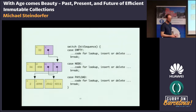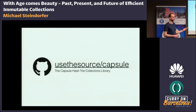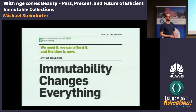If you're interested in learning more about these data structures, you can look at Clojure on the JVM, Scala, or also Capsule — a library I'm involved with that implements some of the more recent concepts of hash tries. To conclude with the words of Pat Helland: immutability changes everything. There is a cost attached to immutability, but most of the time we can afford to pay it, and it also pays off in different ways. Thank you.